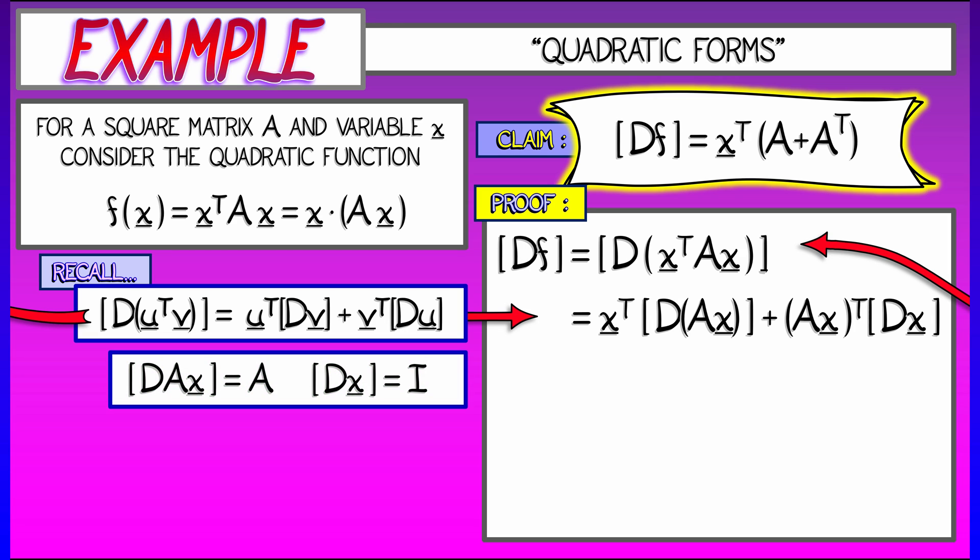These are both linear functions of x, and we recall that the derivative of A times x is A, and the derivative of x is simply the identity matrix. So we get x transpose times A plus quantity A x transpose times the identity matrix.